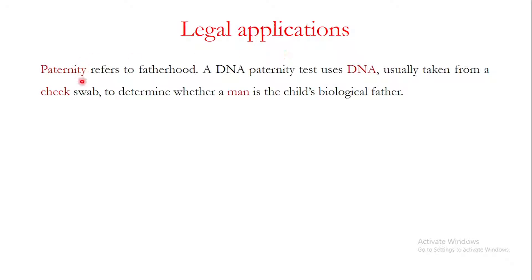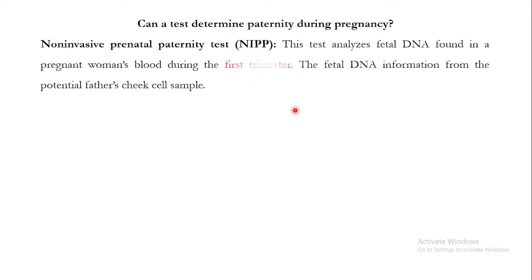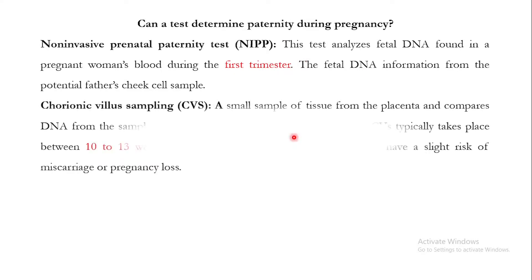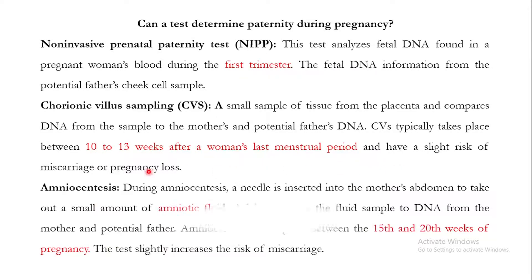Genetics also has legal applications. In the last video, I told you about paternity testing — how you can determine whether a man is a child's biological father. You can use techniques like NIPP, performed during the first trimester, CVS performed between the 10th and 13th weeks after the last menstrual period, and amniocentesis. In all of these techniques, you take the DNA of the fetus and compare it with the DNA of the mother and the father.